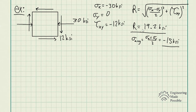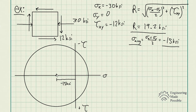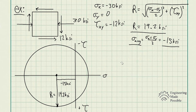Drawing the axes — normal stress along the horizontal and shear stress positive downward, negative upward — the average normal stress of -15 ksi places the center on the negative side. The radius is 19.2 ksi. From the graphical method we can immediately see the maximum shear stress equals the radius, so the maximum shear stress developed is plus or minus 19.2 ksi, with an average normal stress of -15 ksi.